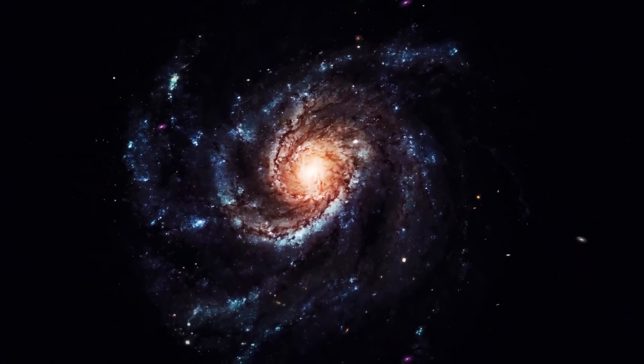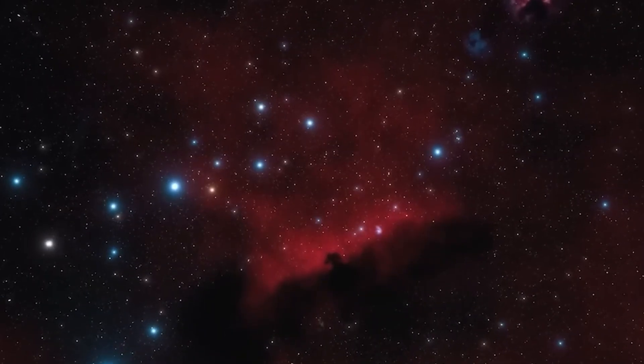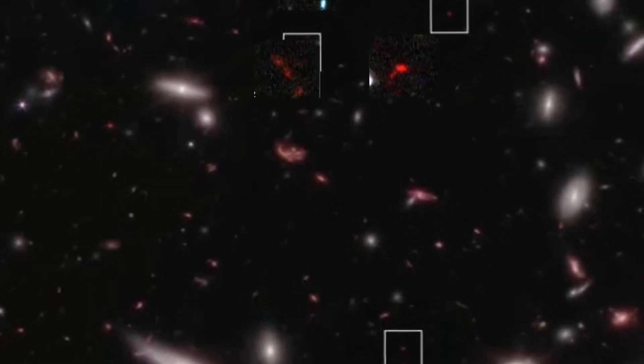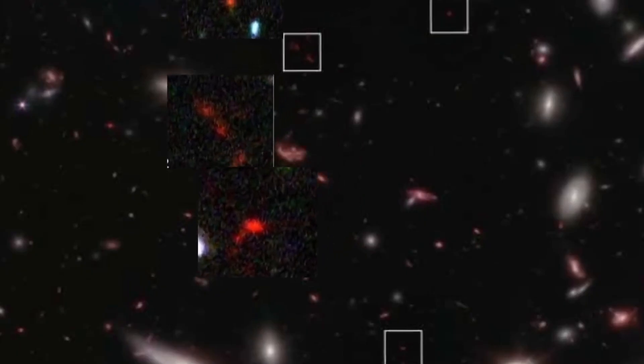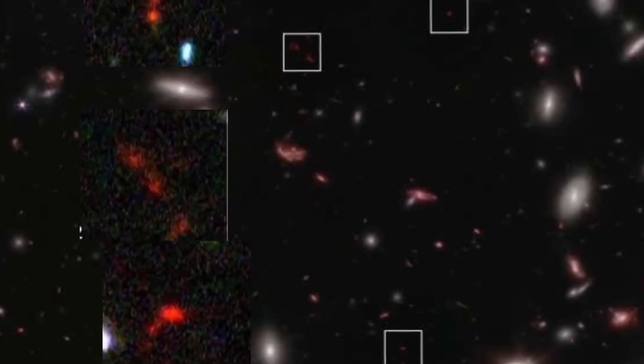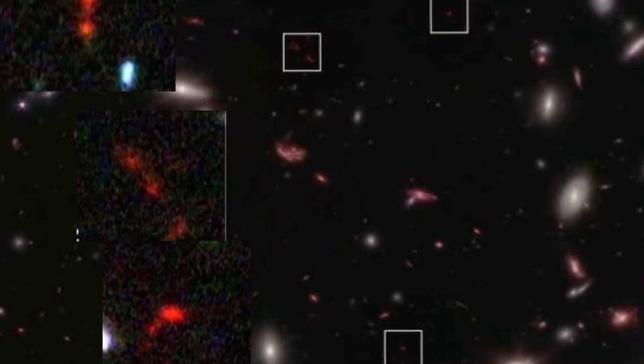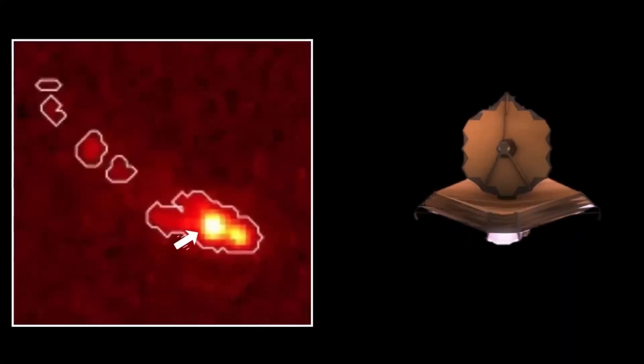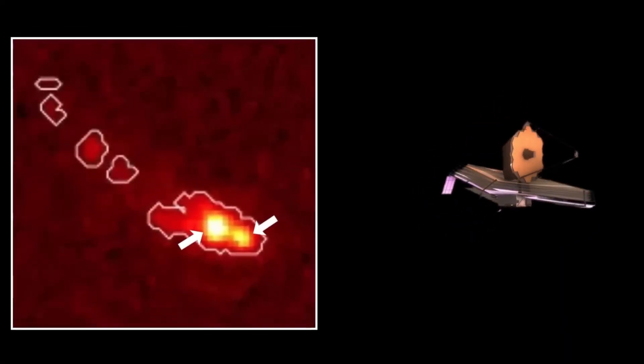This discrepancy was a puzzle even before Webb's launch. But now the gap is glaringly obvious, sparking frustration and fascination alike. Before Webb, telescopes like Hubble and others based on Earth had already identified some of the oldest stars out there, cosmic relics that should have been glowing with lithium's presence. Yet time and again, the numbers didn't add up. It was as if lithium was hiding or simply missing, refusing to fit into the neat narrative scientists had long accepted.